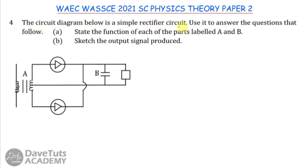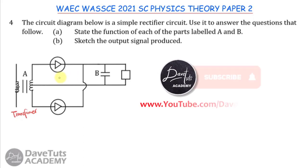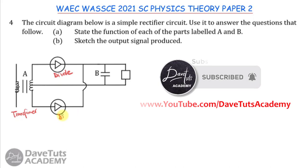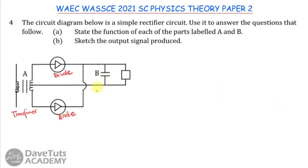Here we have a simple rectifier circuit and must state the function of parts labeled A and B, and sketch the output signal. Part A is a step-down transformer, which produces the alternating current source voltage for the circuit. Part B is a smoothing capacitor, which smooths the rectified current coming from the transformer.